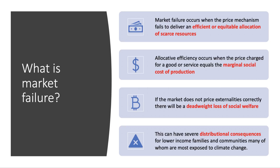Crucially, market failure can also have severe significant distributional effects — distributional consequences — particularly for low income families and also relatively poor communities in developed and developing countries around the world, many of whom are actually most exposed to the risks and the consequences of climate change.